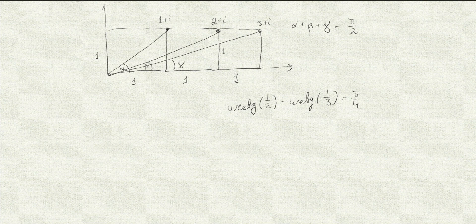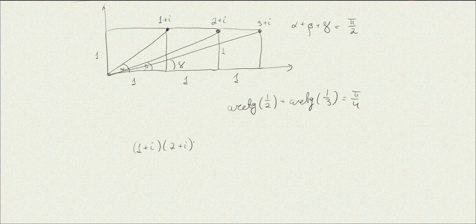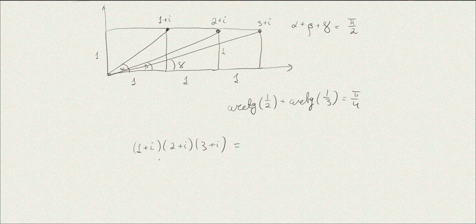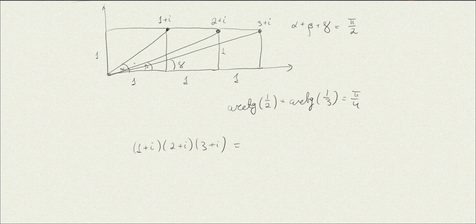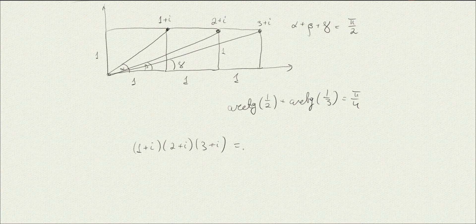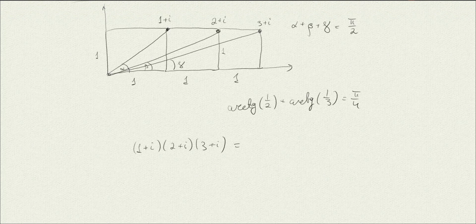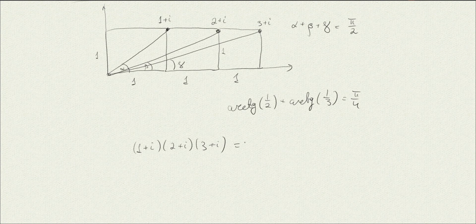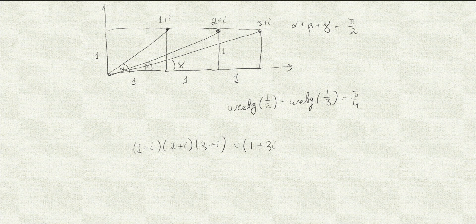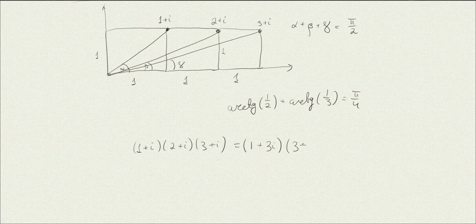So let us try and compute this. When we take 1 plus i times 2 plus i times 3 plus i, let's see what we get. The argument of this number is alpha plus beta plus gamma, as I said, and let's multiply it. So what we get here is 1 times 2, and then minus i squared, which is 1. So it's going to be 1 plus 3i, and times 3 plus i.